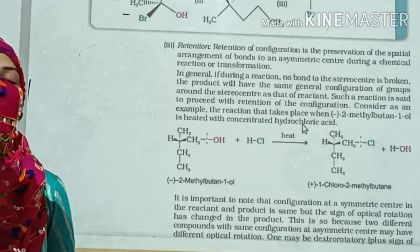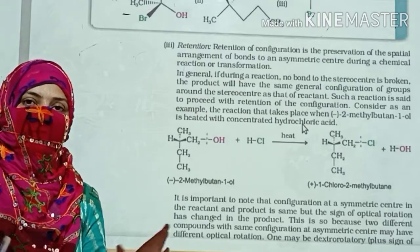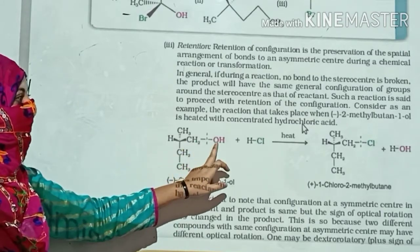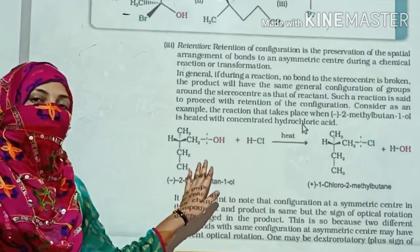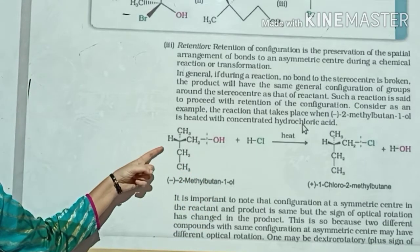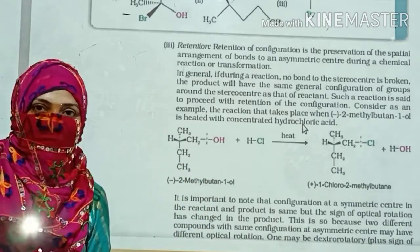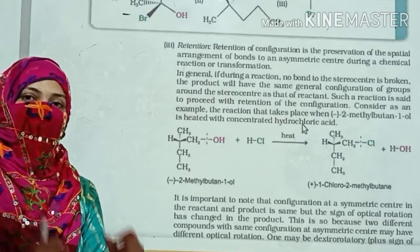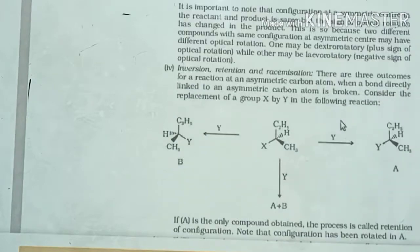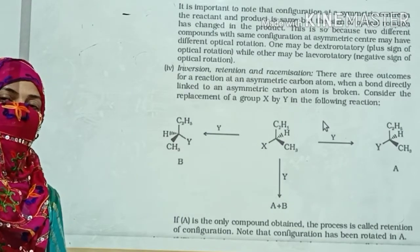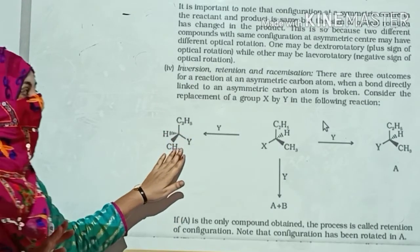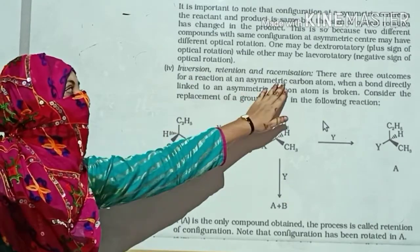It is asked in exams what happens regarding inversion and retention — that is, changes in configuration. When the nucleophile attacks from the same side where X left, it is called retention of configuration. When it attacks from the back side, it is called inversion. In SN1, both are possible — 50% retention and 50% inversion — and this is called racemization. In SN2, only inversion is possible.